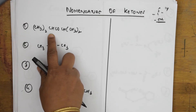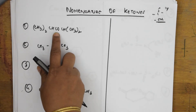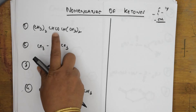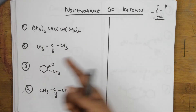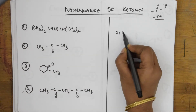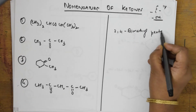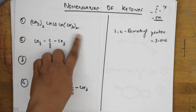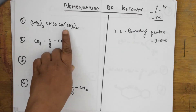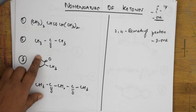If I take this as carbon one, this becomes two, this becomes three, four. The total number of carbon atoms is five — pent. So the name is 2,4-dimethylpentan-3-one. If I open this chain it will become one, two, three — and this will be the fourth carbon — pentan-3-one.